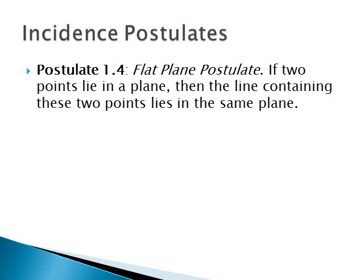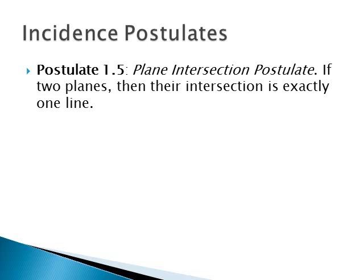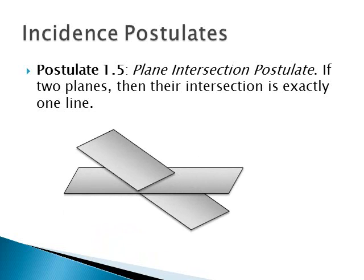The flat plane postulate states: if two points lie on a plane, then a line containing these two points lies on the same plane — so if the plane and the line share two points, the line is inside the plane. Then the plane intersection postulate: if two planes intersect, their intersection is exactly one line. There is a picture showing that line where the two planes intersect, since planes aren't really defined but this model illustrates it.